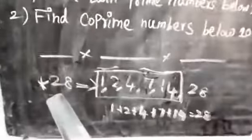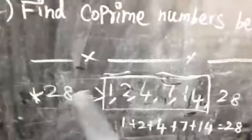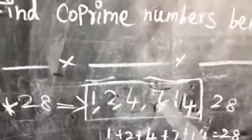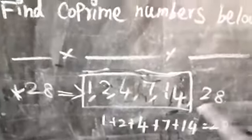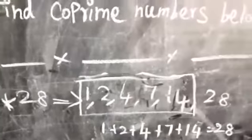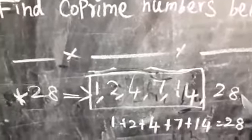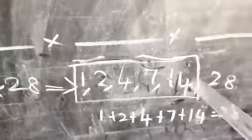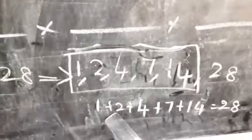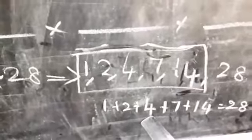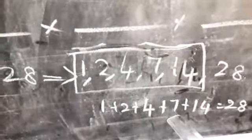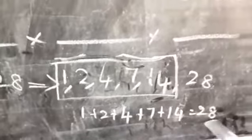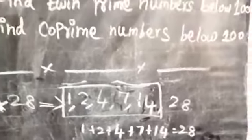Now look at the second example: 28. The factors of 28 are 1, 2, 4, 7, 14, and 28. Excluding the number, we add 1 plus 2 plus 4 plus 7 plus 14. That gives: 1+2=3, 3+4=7, 7+7=14, 14+14=28. So 28 is a perfect number.